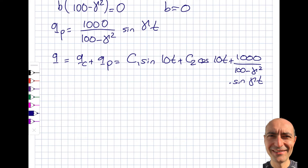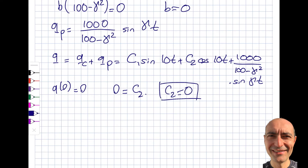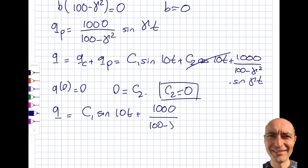Let's start with the easy one. Applying Q(0) = 0: sin(0) = 0 so the first term vanishes, sin(0) = 0 so the third term vanishes, and cos(0) = 1 so I get 0 = c₂. Therefore c₂ = 0. Rewriting the charge: Q(t) = c₁ sin(10t) + [1000/(100 − γ²)] sin(γt). I now have only one unknown: c₁.